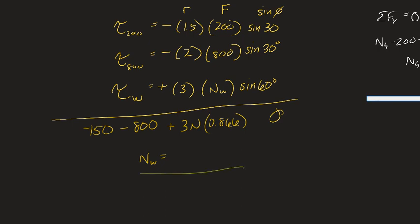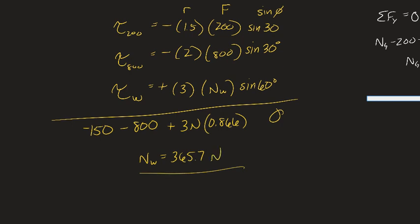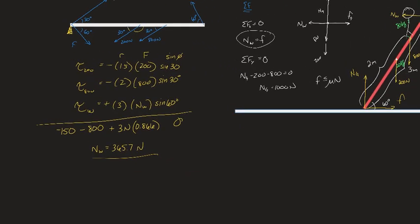So what is the normal force on the wall? Can somebody tell me, please? 365.7. And it was like in stereo. That was pretty cool. So this one wasn't terrible, it's just a lot of work - a lot of grunt work too. So we have the normal force on the wall now, and we know that that has to equal the frictional force.